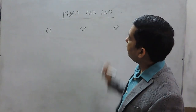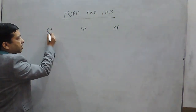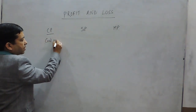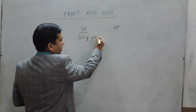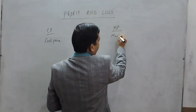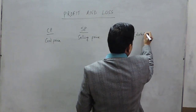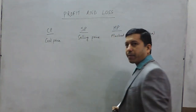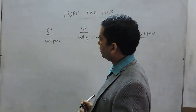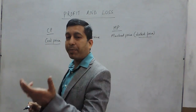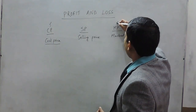Today we are discussing profit and loss. There are terms like CP, which is known as cost price; SP, which is known as selling price; and MP, which is known as mark price. This mark price can also be written as listed price or list price. When we talk about cost price, shopkeepers first purchase articles, and the price at which they purchase the article is known as cost price. After the cost price, they mark a particular price on that article.